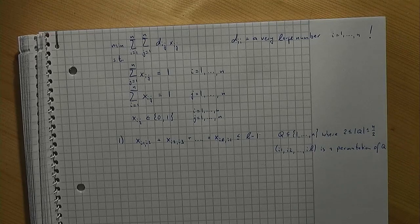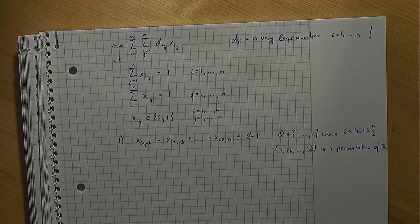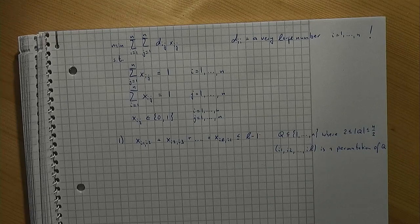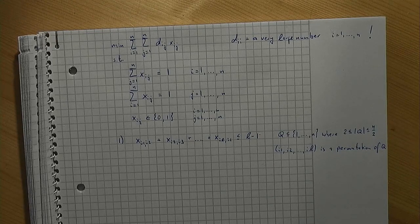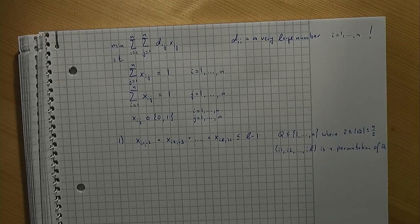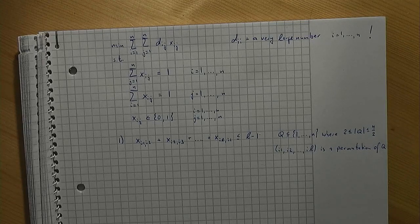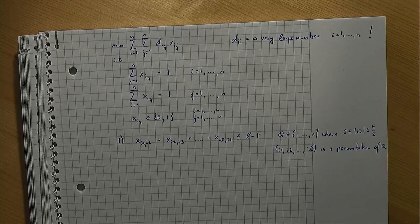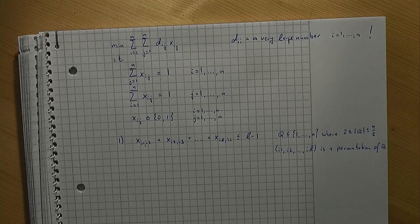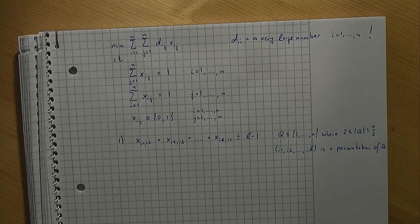A few remarks are necessary. The subsets of locations we need to consider, denoted by q, contain at least two locations. A short cycle with one location, some xii would be 1 then, won't occur because we have chosen dii to be a very large number as discussed before. On the other hand, we do not need to consider subsets containing more than half of the locations, because if there was a short cycle with more than half of the locations, there would be another short cycle with less than half of the locations. The latter would be forbidden though. And finally, for each subset we consider every possible sequence, a so-called permutation, of the locations in the subset. The index l equals the number of elements in q. This is just one way to avoid short cycles. Another possibility is the following.